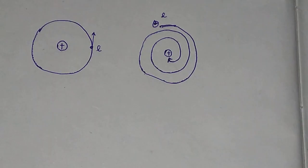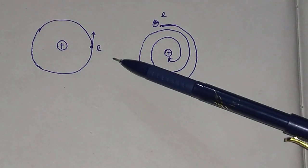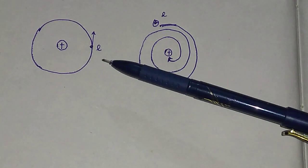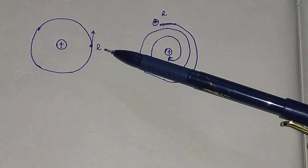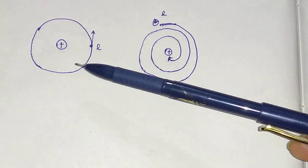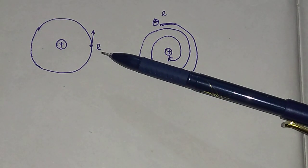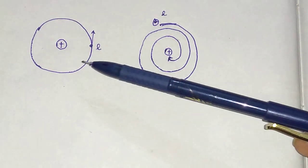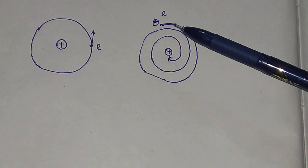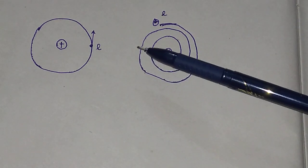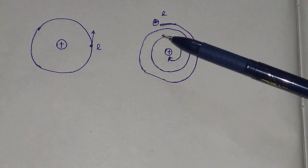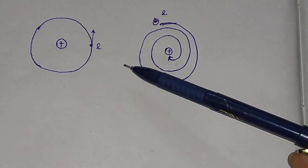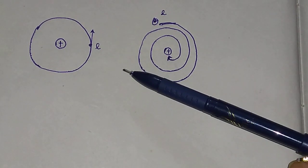According to Maxwell's theory of electromagnetism, if the electron revolves around the nucleus, it will continuously emit electromagnetic radiation. Electron being a charged particle, when it revolves around the nucleus it will continuously emit energy. So the orbit of the electron will spiral inward and it will finally fall into the nucleus. Therefore, the stability of the atom could not be explained by classical physics.